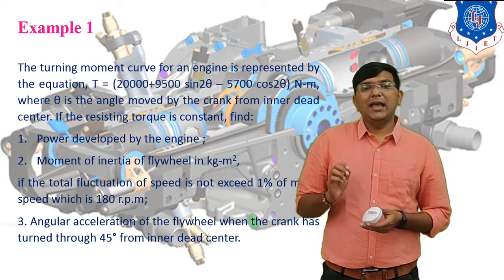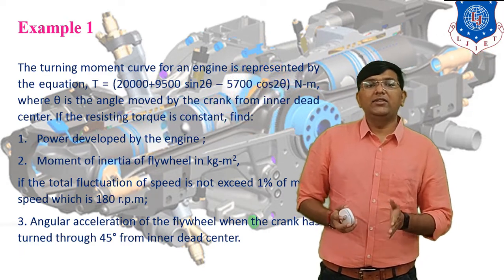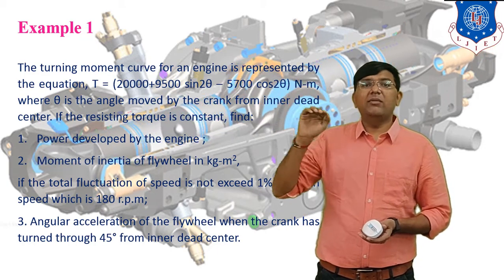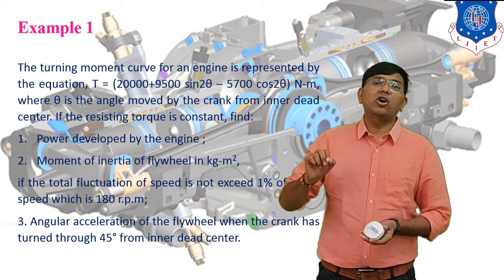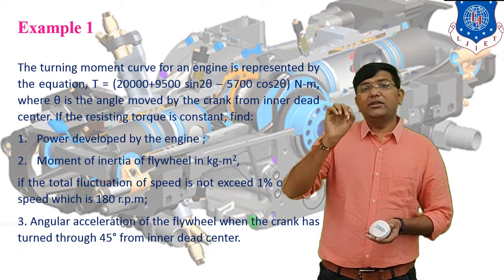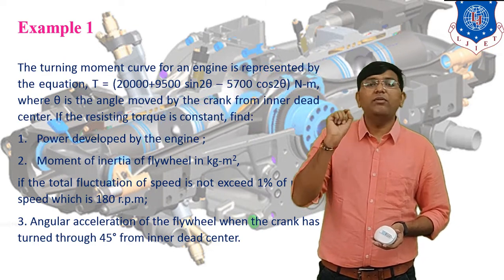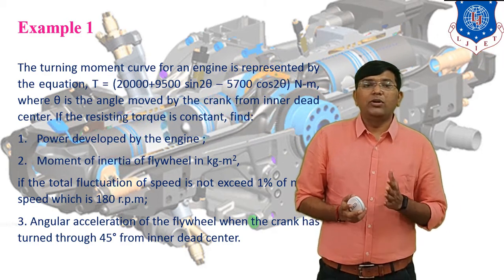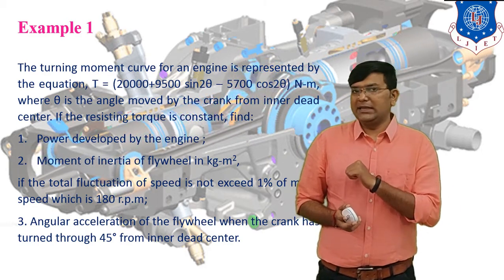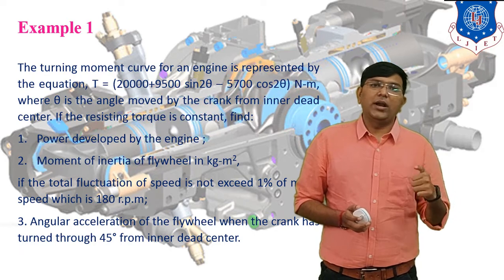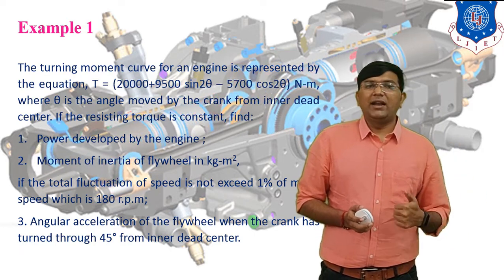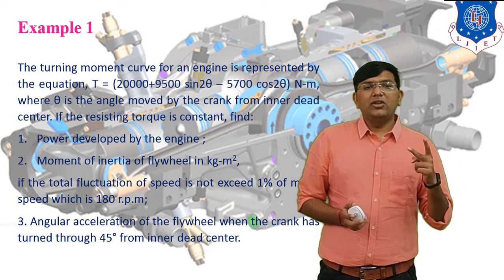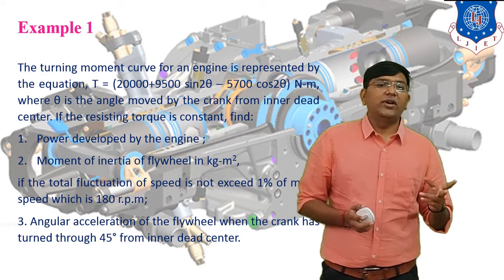Where theta is the angle moved by the crank from inner dead center. If the resisting torque is constant, its value is indicated by a horizontal line on the diagram. You have to find out: first, the power developed by the engine — that is energy required per second — and second, the moment of inertia of the flywheel, capital I.